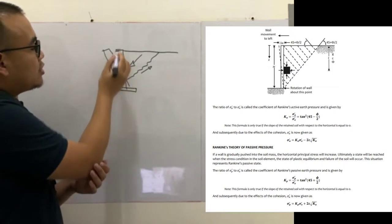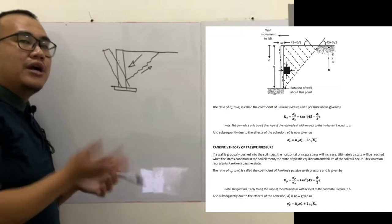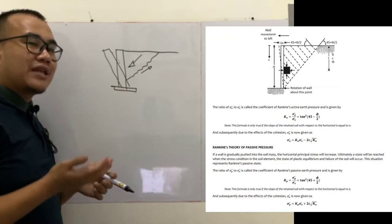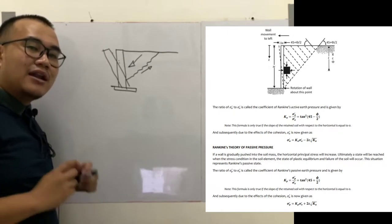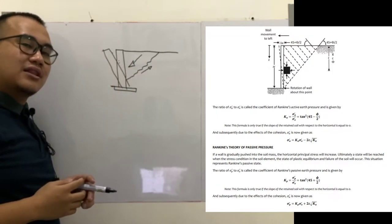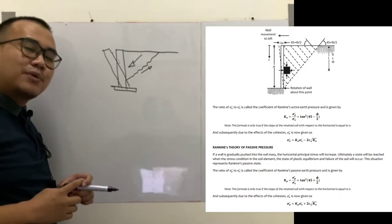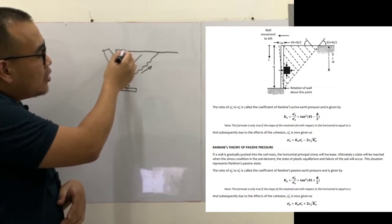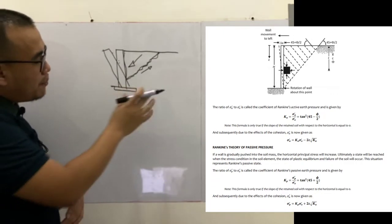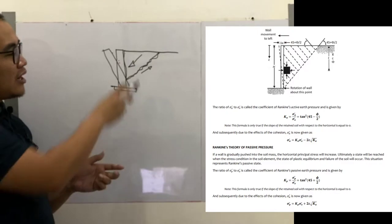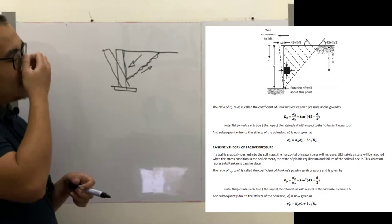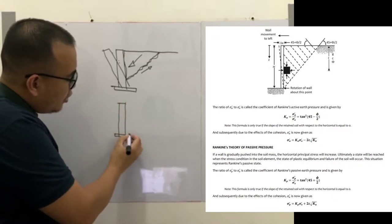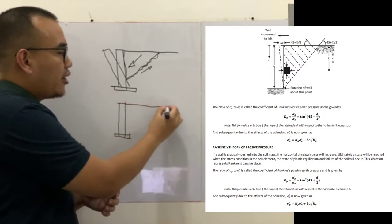Plastic equilibrium is a state where the soil is on the verge of failure. It doesn't necessarily mean the wall structure has failed just because it moved toward active conditions. In fact, active pressure is sometimes preferred — only the triangular failure wedge needs to be carried by the wall, rather than the entire soil body.